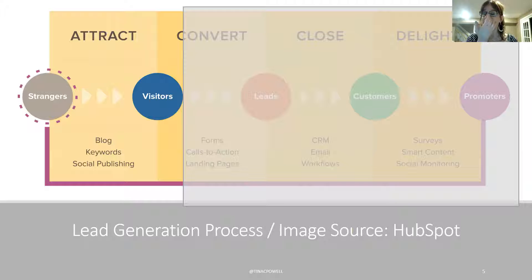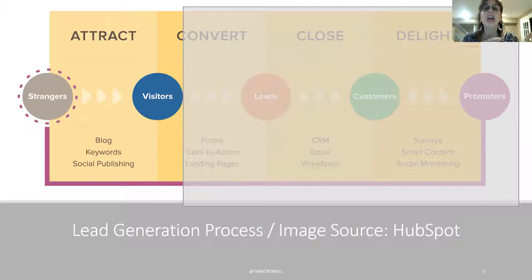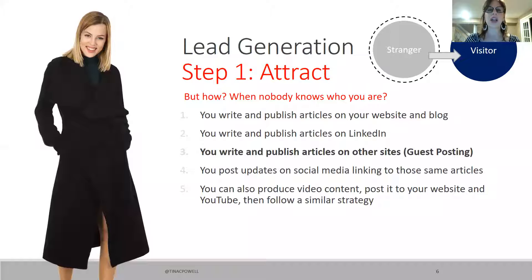Really, what we're doing is going from stranger to visitor. The first step of the lead generation process is attract — we are trying to attract people potentially interested in what we have to offer. Then the next step is conversion. This image, by the way, is by HubSpot. You can see that part of it is ghosted out — that's intentional. I want you to be concentrated on this particular part of the process. Step one is attraction: taking strangers and hopefully making them visitors. A visitor is somebody who is more likely to become a lead.